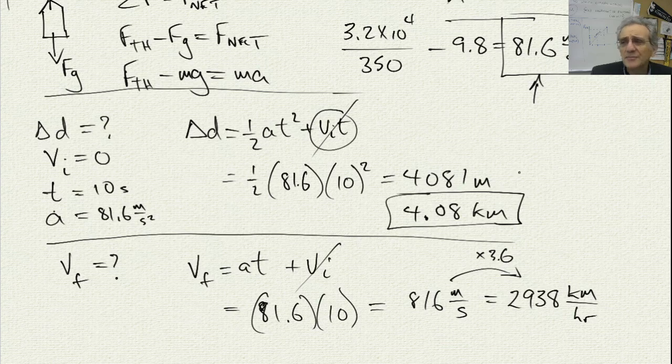So that's essentially 8 times. If you make a guesstimate here and say, if g is 10, which is about 9.8, that's 8 times the acceleration of gravity. That means if we put an astronaut in here, they're going to experience 8 g's. And that's really not good for a human. They're not going to be able to stay conscious at that type of acceleration.